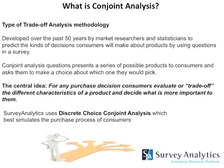Conjoint analysis, in its purest form, presents a series of possible products to consumers and asks them to make a choice about which one they would pick. The core idea is that for any purchase decision, customers evaluate or trade off the different characteristics of a product — price, package size, color, speed, and so on — and decide which is more important to them. In our heads, we have a kind of list: for me, buying cereal might be about packet size; for others, it may be fiber content or whether it has fruits. Consumers have a set of values which we call part worths, estimated by conjoint analysis.